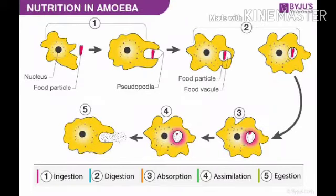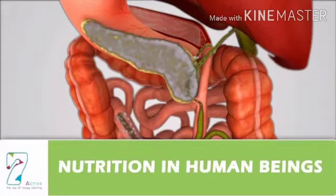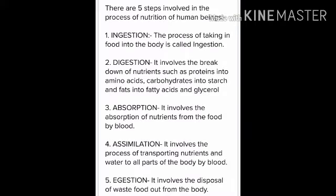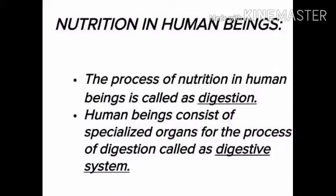This diagram shows the five steps of nutrition — ingestion, digestion, absorption, assimilation, and egestion — in amoeba. Our next topic is nutrition in human beings. Digestion in humans is extracellular, that is, it takes place outside the cell in an enclosed structure. We take food through the mouth, then digest it, absorb it, and utilize it in various body functions. The unused or unabsorbed parts of the food are thrown out of the body. Specialized organs involved in digestion together form the digestive system.